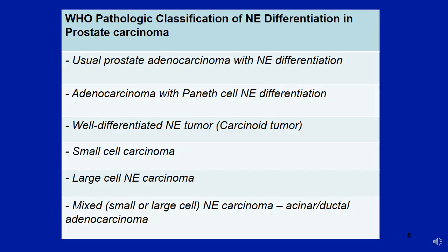In comparison, the second issue is neuroendocrine expression demonstrated by neuroendocrine markers. The 2016 WHO classification lists six different entities under the neuroendocrine prostate cancer category, and three of them are relatively well-differentiated tumors: usual prostate adenocarcinoma with neuroendocrine differentiation, adenocarcinoma with Paneth cell neuroendocrine differentiation, and well-differentiated neuroendocrine tumor or carcinoid tumor. These three entities, even though they show neuroendocrine marker expression, are clinically often insignificant and not biologically aggressive.